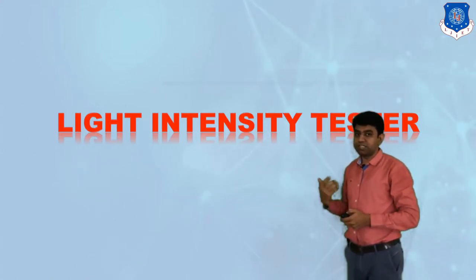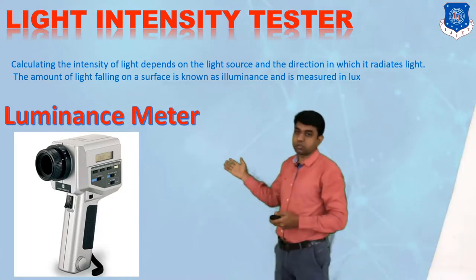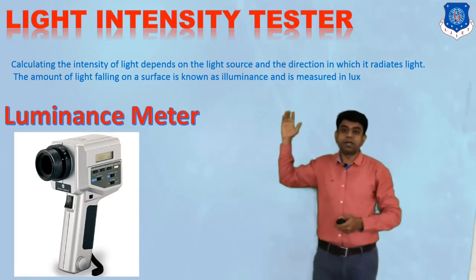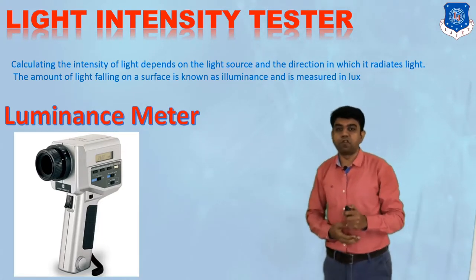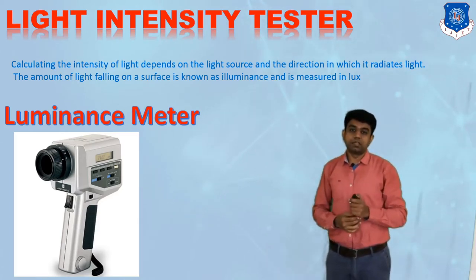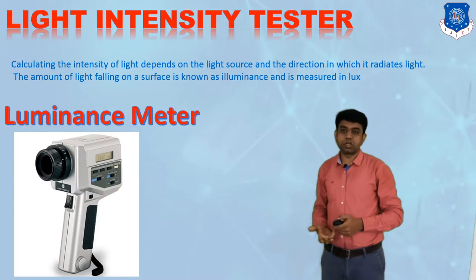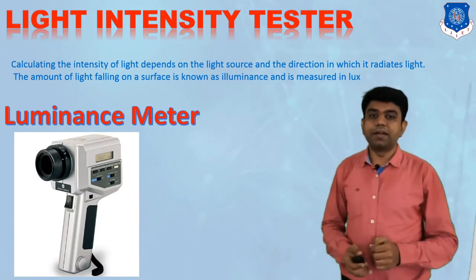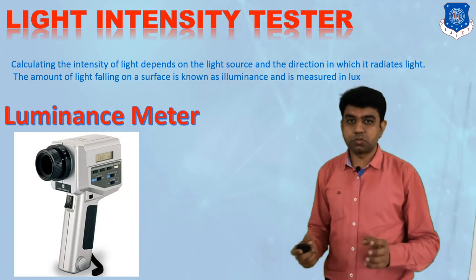Sometimes we also need to check the intensity of the light. For that, we have a light intensity tester, also called a luminance meter. In this luminance meter, we calculate the intensity of light depending on the light source and the direction in which it radiates. The amount of light falling on a surface is known as illuminance and is measured in lux. With this apparatus, we can simply measure how effective the light is. If the effectiveness of the light has been reduced, we need to replace the particular lamp. This is how headlamp alignment and testing is done.